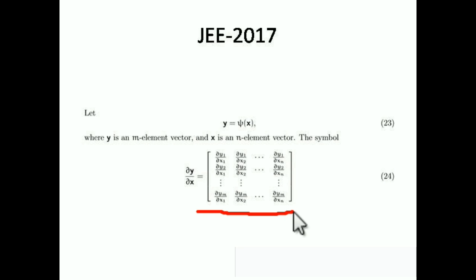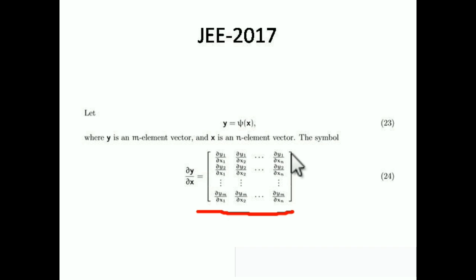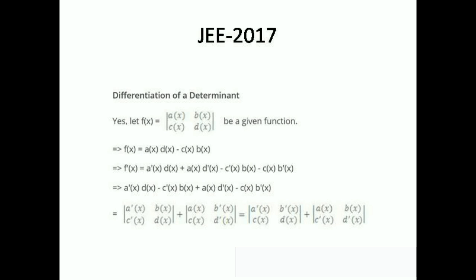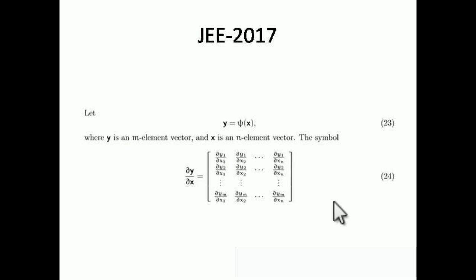You just need to know the formula. The first column is formed by differentiating all column elements with the first element of the row vector; the second column differentiates all elements with the second element of the row; continuing up to the last element of the row. This gives you an m×n matrix as the answer.